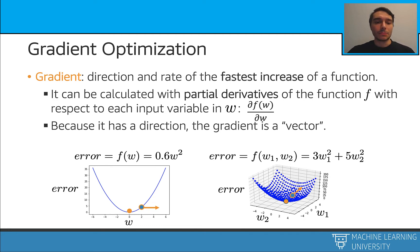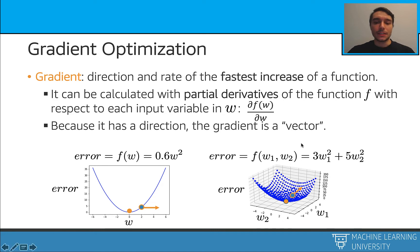Let's take a look at these examples. For this function, I can calculate the gradient by taking the partial derivative. At this point, the gradient points in this direction. Similarly, I can calculate the gradient for this two-input function. When I do that, the gradient looks like this, and as you see, it is pointing the direction that the function is going to increase.